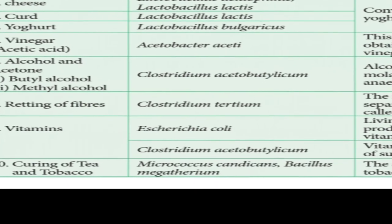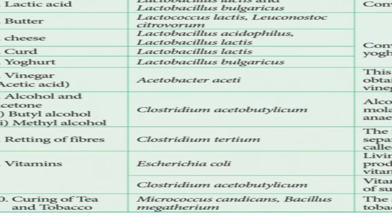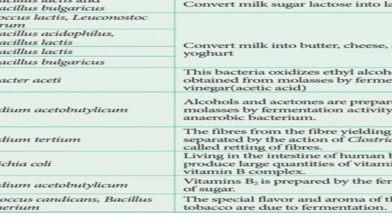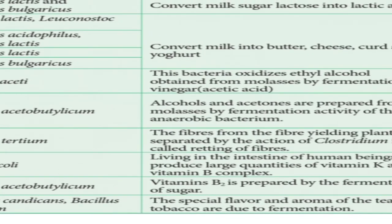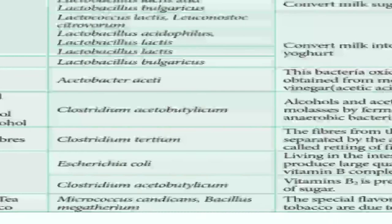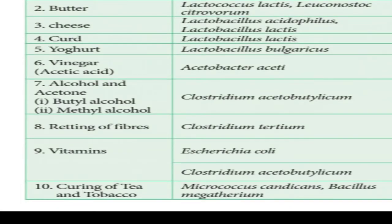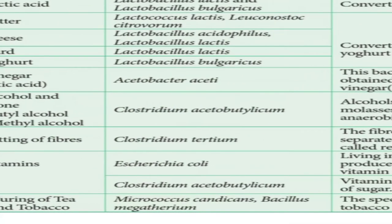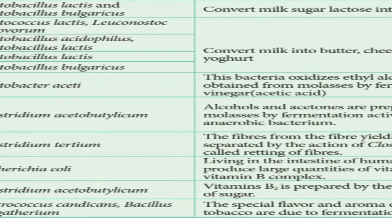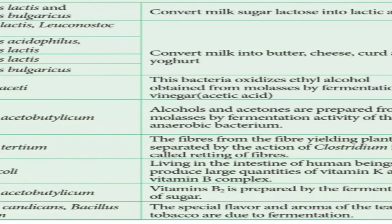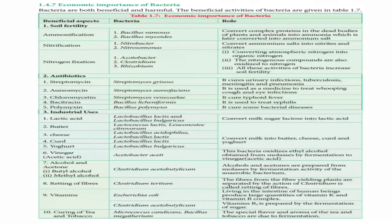Vitamins: E. coli lives in our intestine and has the quality of producing vitamin K and vitamin B complex. Next is curing of tea and tobacco — Micrococcus canadicans and Bacillus megatherium are responsible. The flavor and aroma of tea and tobacco are due to the fermentation by these bacteria present in them.